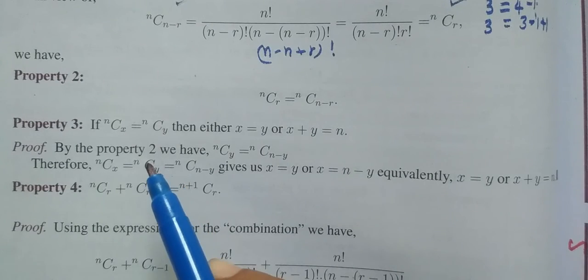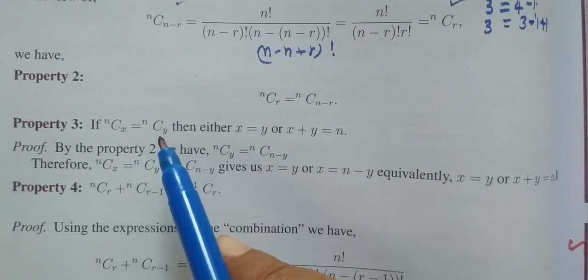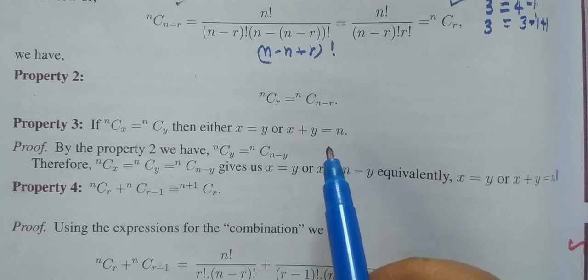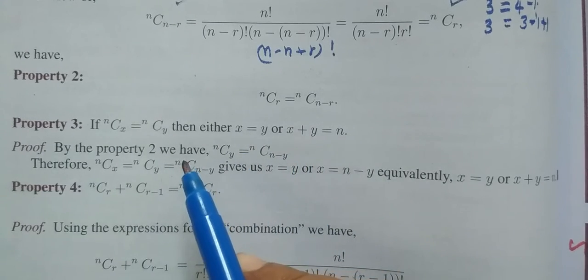Now, coming to property 3. If ncx equal to ncy, then either x equal to y or x plus y equal to n. Now, here conversion number, this result is null.